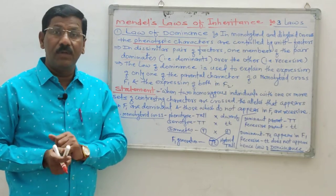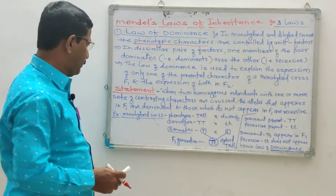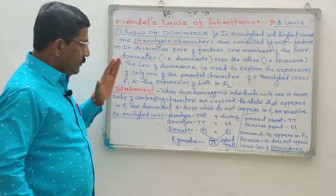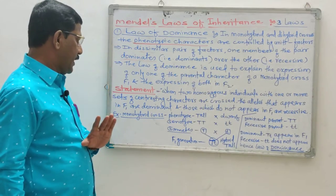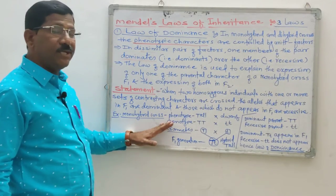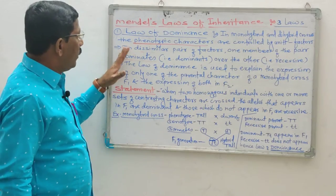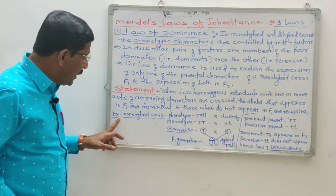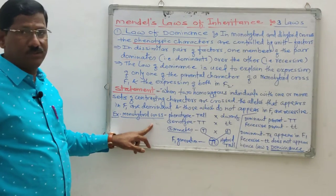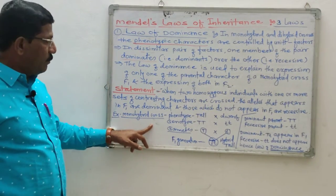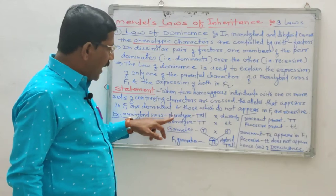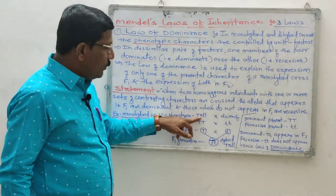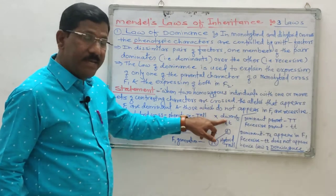The statement and explanation of the law of dominance can be illustrated with a suitable example: a monohybrid cross where the parental phenotypes are a tall pea plant crossed with a dwarf pea plant.